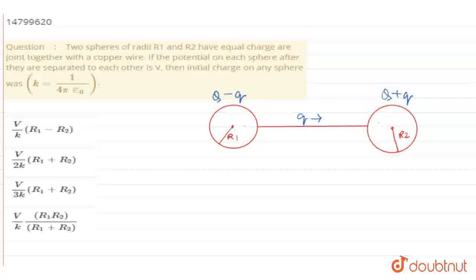V will be equal to k(Q - q)/R1 for this sphere, where k is 1 by 4 pi epsilon. And for this sphere it will be equal to k(Q + q)/R2. These two are equal. First I am considering the first case, that is V = k(Q - q)/R1.